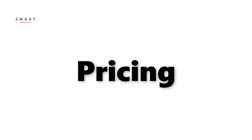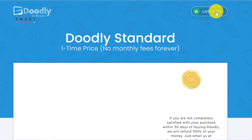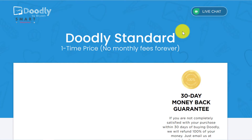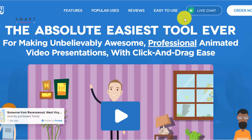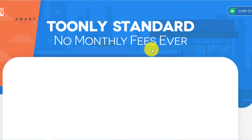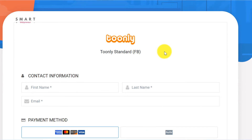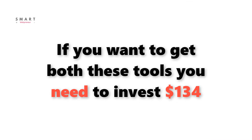What about the price? Both Tunely and Doodly have similar pricing plans. Each of these tools is available for a one-time investment of $67. That means if you want to get both these tools, you will have to shell out $134.